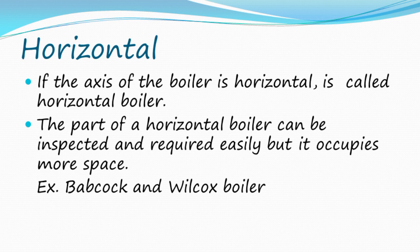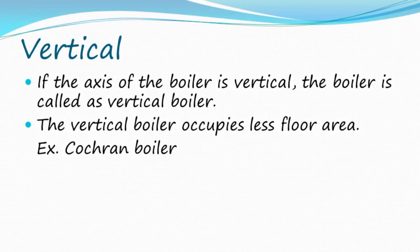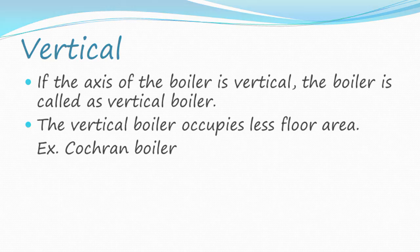Example of a horizontal boiler: Babcock and Wilcox boiler. If the axis of the boiler is vertical, the boiler is called a vertical boiler. The vertical boiler occupies less floor area. Example: Cochrane boiler.